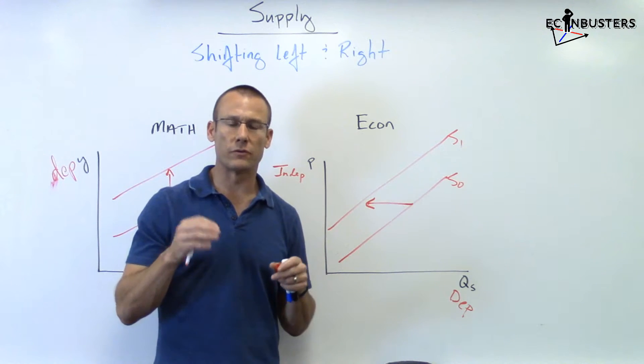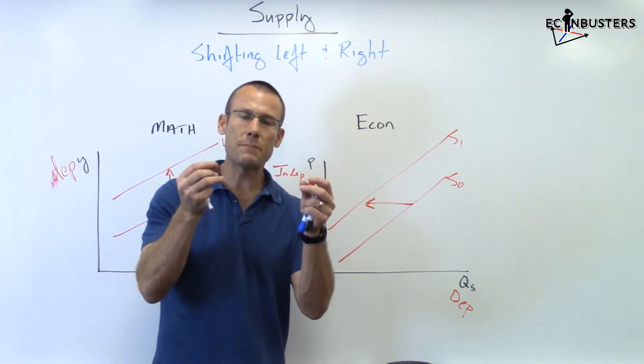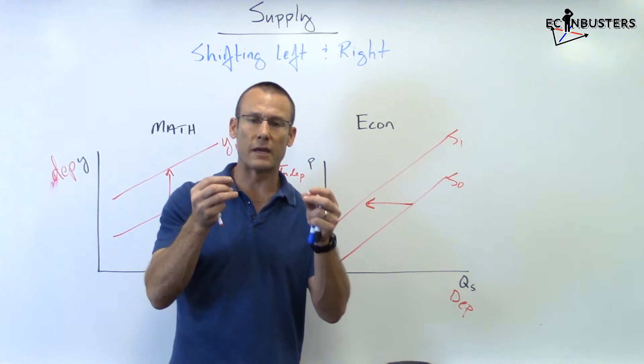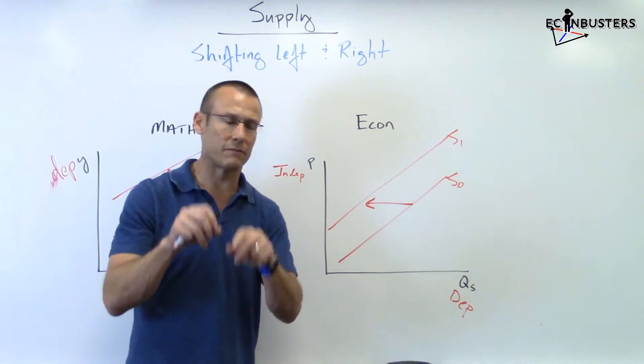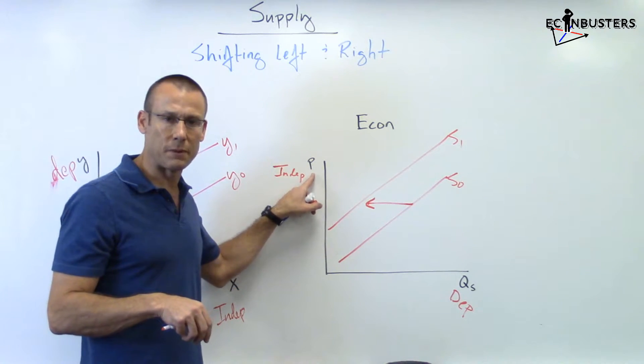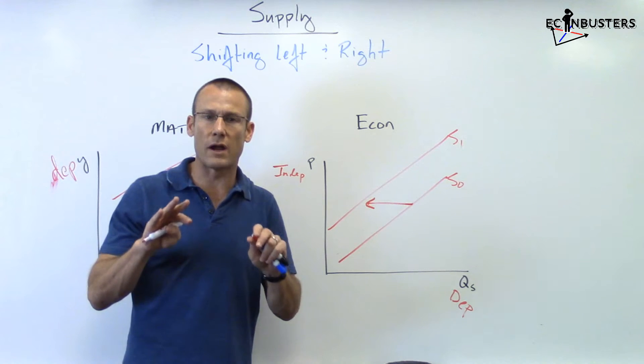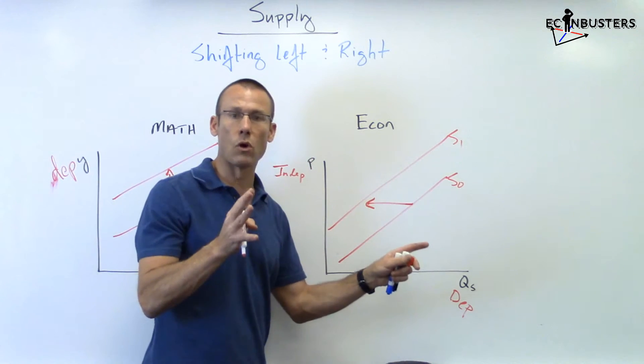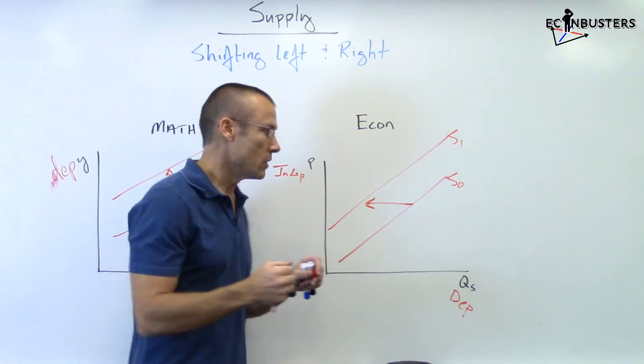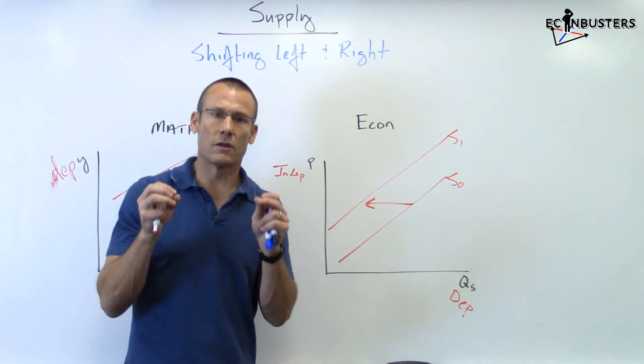Here's the thing guys: when you talk about a curve shifting, whether it's shifting up and down or left and right, it's all about what the dependent variable is doing in relation to the independent variable. By embracing the fact that the quantity supplied is the dependent variable and price is the independent variable, you're going to understand why we're talking about left and right shifts. When curves shift right, we're getting more dependent at every independent. When curves shift left, we're getting less dependent variable, a less amount of that dependent variable at every single independent variable.